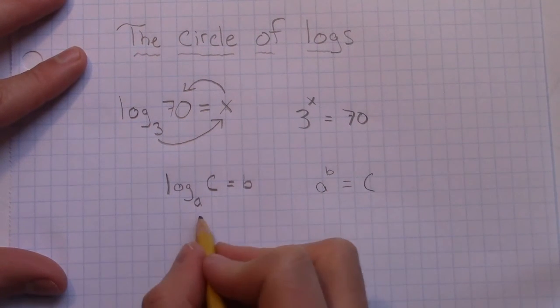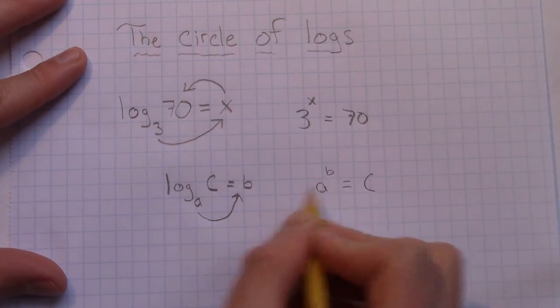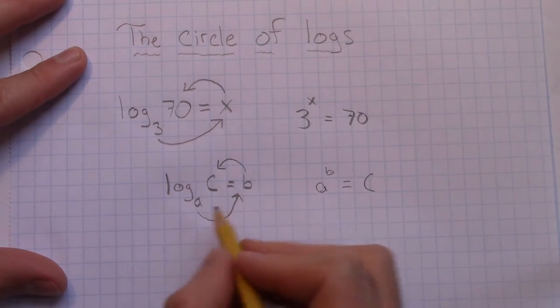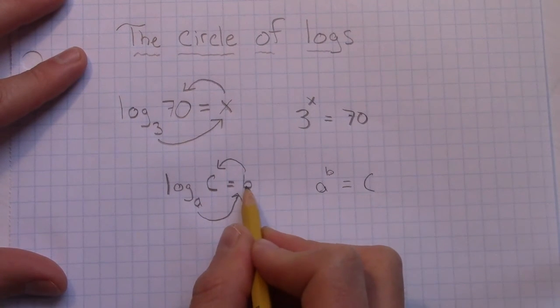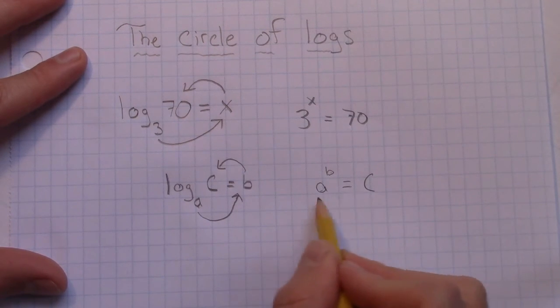So converting back and forth, a to the power of b equals c. So this is how the circle of logs works. If you have, this is the base, this is the exponent, this is the answer, so to speak. And that's exactly what this statement says right here.